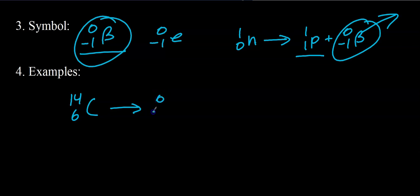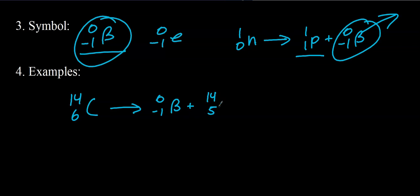When we write nuclear equations, we balance mass and charge. For carbon-14: what plus 0 equals 14? The daughter nuclide has a mass of 14. What plus negative 1 equals 6? That would be 7 — not 5. What has 7 protons in its nucleus? That would be nitrogen. So carbon-14 transmutates into nitrogen-14. This is the beta decay equation for carbon-14.